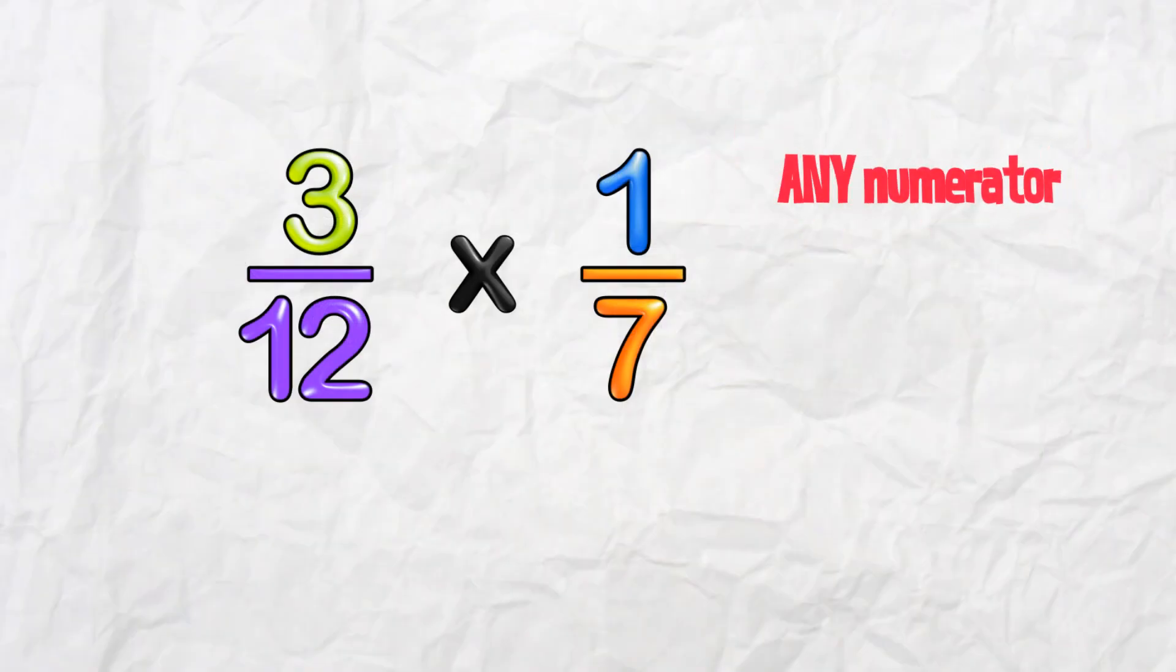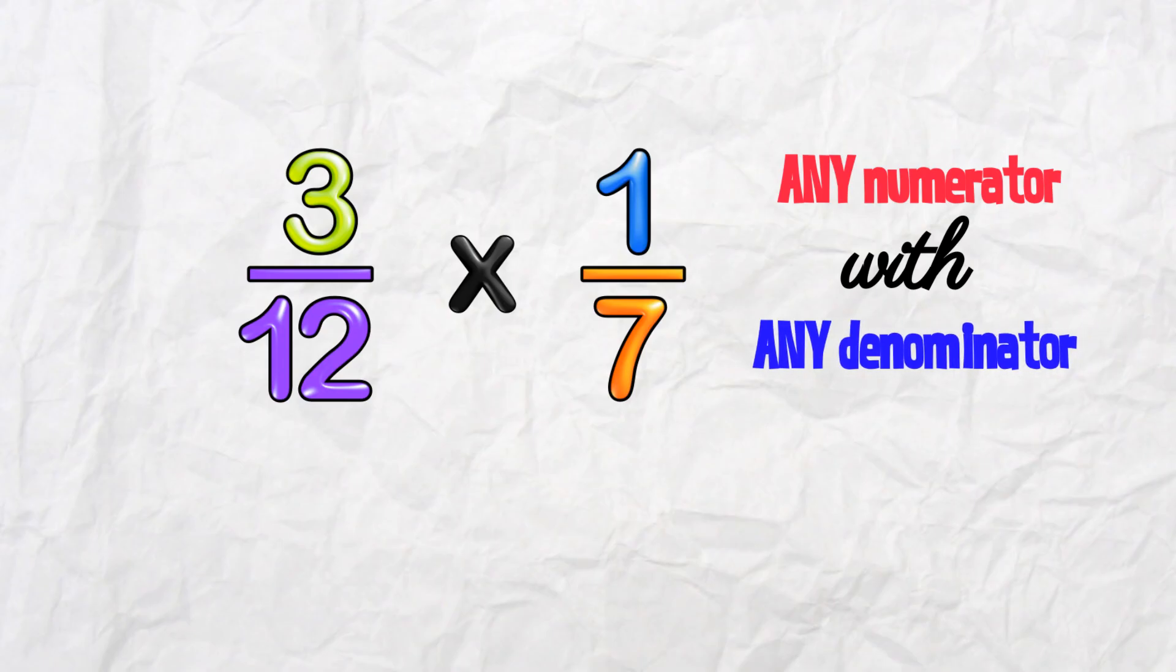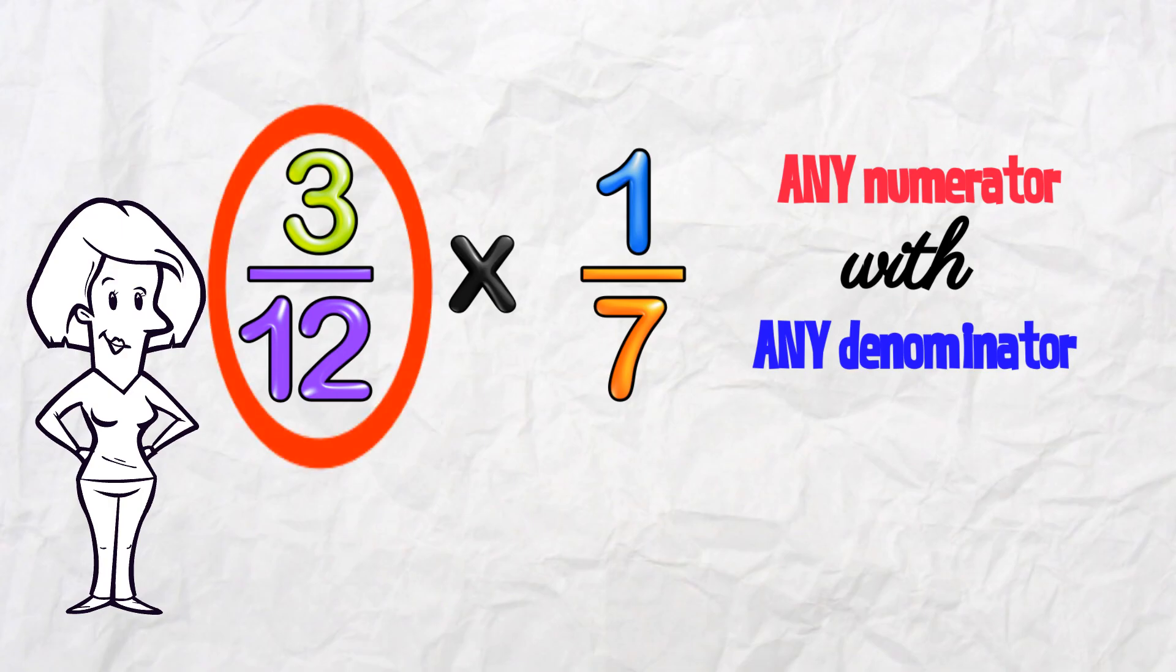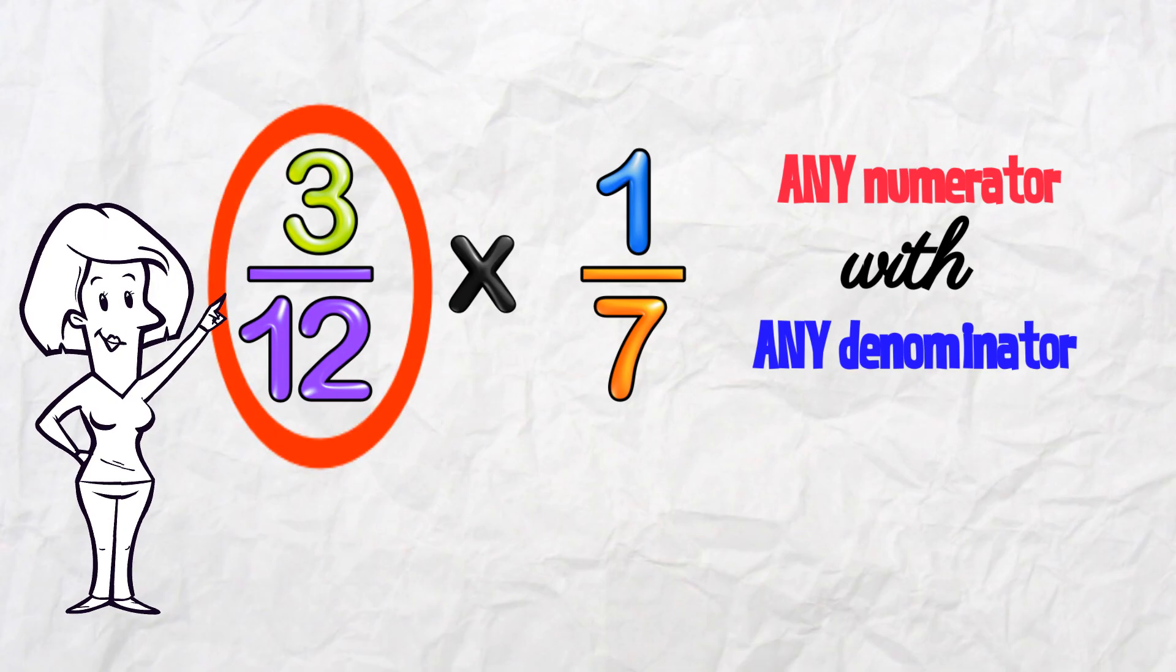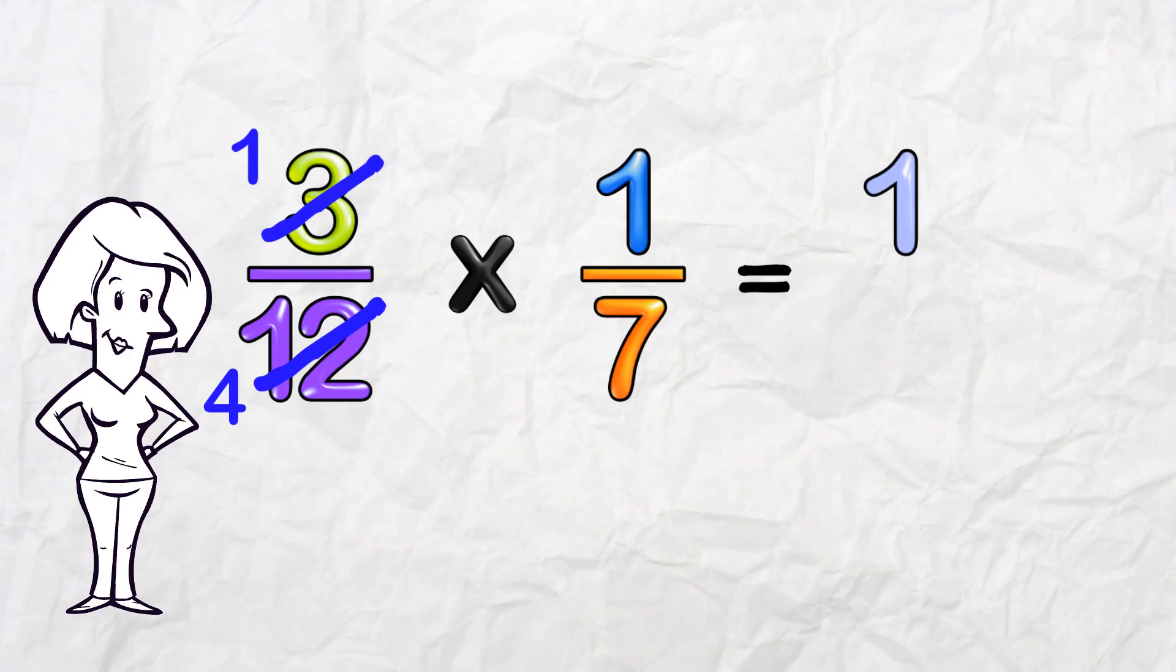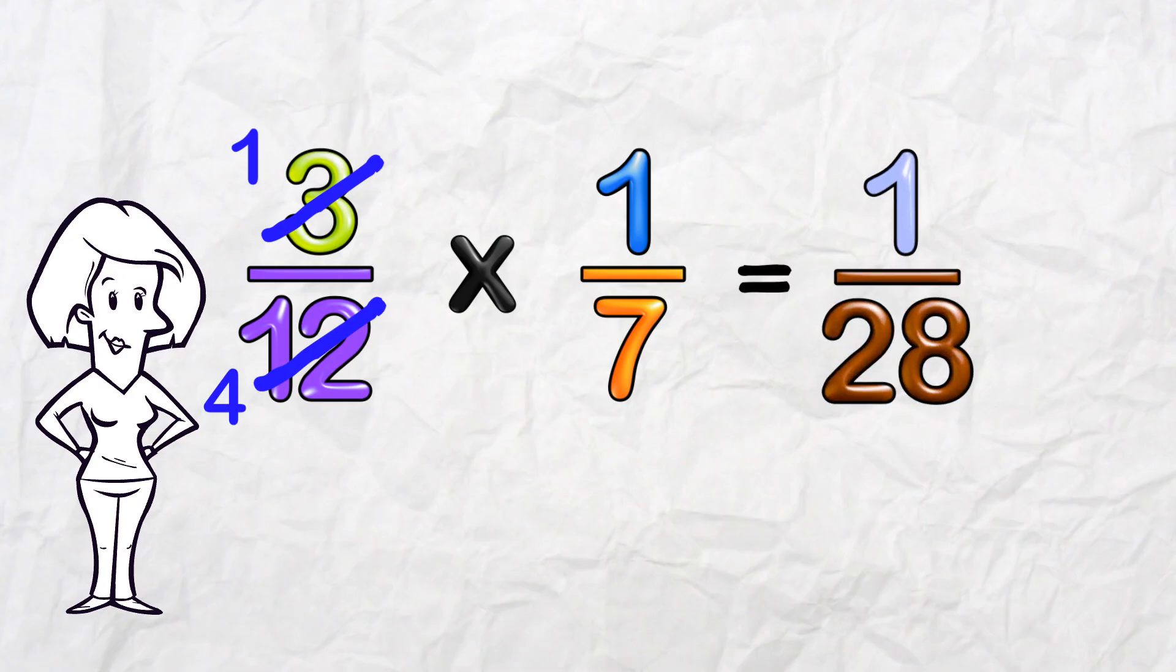Any numerator can work with any denominator to reduce the fractions you have to multiply. Here, 12 is in the 3 times table. I can reduce this whole fraction here. First, we reduce as much as we can. Then we do the multiplication. If you can still reduce at the end, do it!